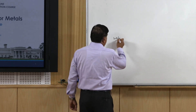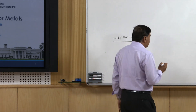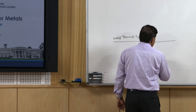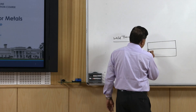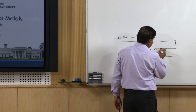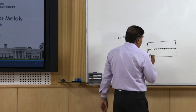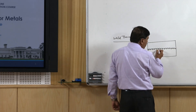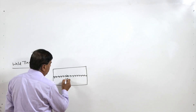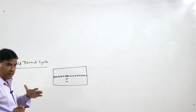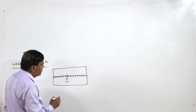The topic is weld thermal cycle. Whether it is fusion welding or resistance welding, wherever external heat is supplied for the purpose of softening the metal — like in fusion welding where the weld is made by applying heat through an arc or through a flame — we can look at different points: location 1 at the weld centerline, location 2 slightly away, and location 3 further away adjacent to the weld.